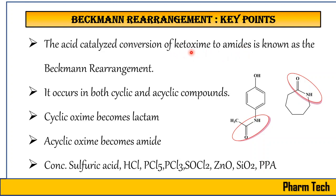When we have keto-oxime to amide conversion, the keto-oxime can be a cyclic keto-oxime or it can be an acyclic keto-oxime. For example, cyclohexanone converted to its oxime will become a cyclic keto-oxime, and if you take a normal ketone to its oxime, that will become an acyclic keto-oxime.